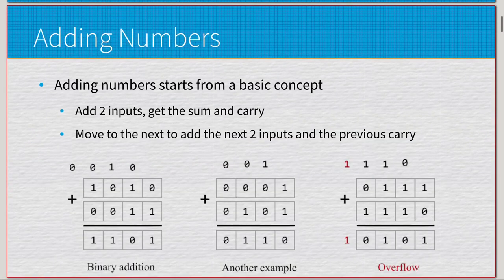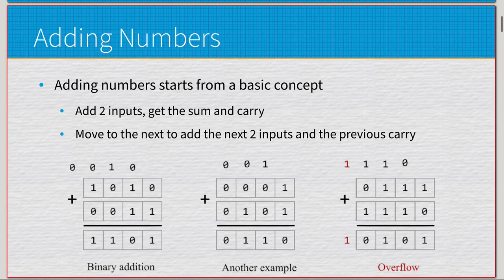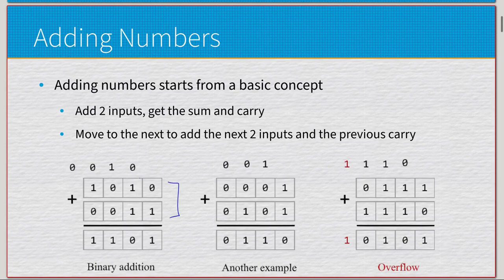Let's take a look at adding some numbers together because that's going to set up the foundation for what we're doing. Adding numbers starts from a very basic concept. We add two inputs, get a sum and a carry, move that on to the next step. Next two inputs and the previous carry get added together, and then continue that. Starting on the right side, we have two values: 0 and 1. Add those together, we get 1. We don't have a carry — we still assume there is a carry bit, it's just 0 in this case.